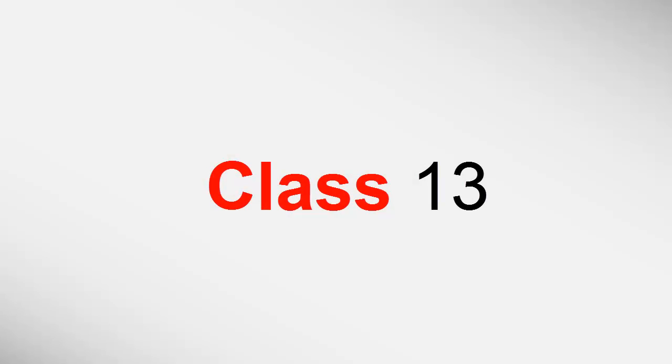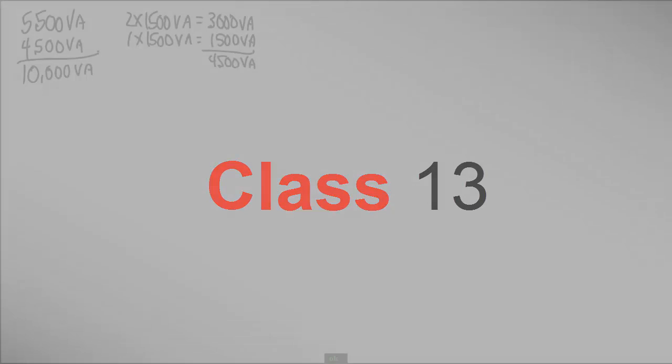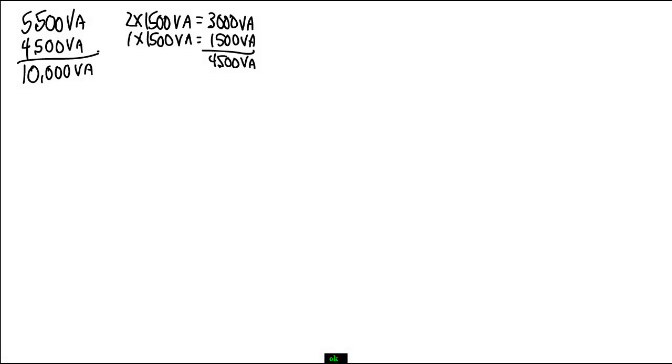Alright, we are at class 13, well over the hump, headed towards the end of the quarter. Let's get back to our calculation that we started or ended with at last class. As you can see, I have a similar calculation here at 5,500 VA for our general lighting load. Then we have our two small appliance branch circuits and our one laundry circuit. That gives us another 4,500 VA for a total of 10,000 VA for our general lighting load.